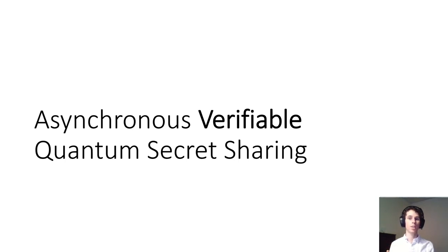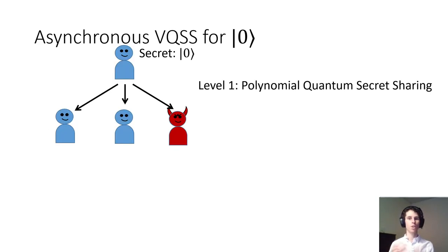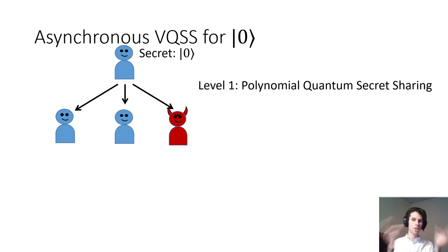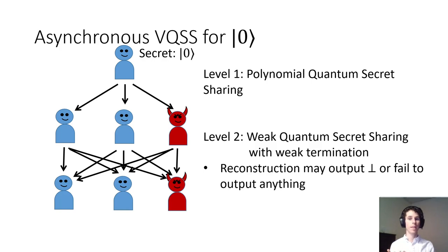It is important to note that late checking does not change the case for a corrupted dealer, since the delayed honest parties might never receive the shares in the first place. Using the weak quantum secret sharing protocol we just constructed, we can now build asynchronous verifiable quantum secret sharing. As before, it is enough to just verifiably share zero states. We'll use the two-layer approach from prior work.